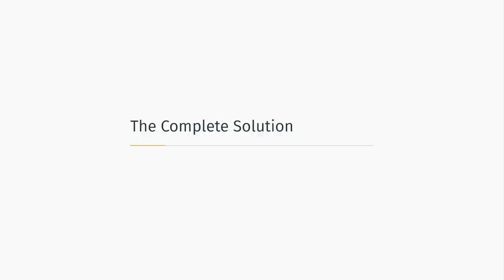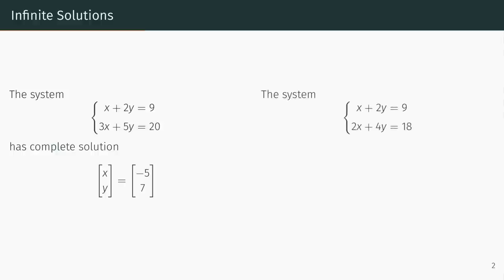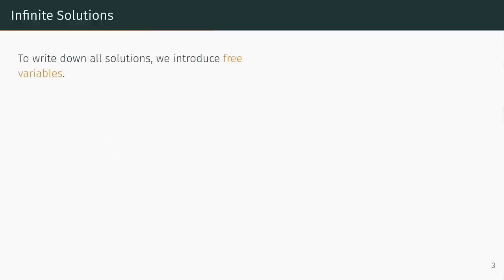The complete solution to a system of linear equations is a representation of all solutions to that system. Since the system x plus 2y equals 9 and 3x plus 5y equals 20 has a unique solution, we can write the complete solution to this system as a single vector, xy equals minus 5, 7. However, the system x plus 2y equals 9 and 2x plus 4y equals 18 has infinitely many solutions. How do we write the complete solution to this system? The answer relies on the idea of free variables.